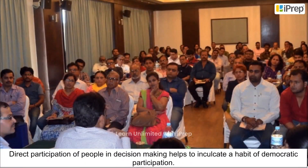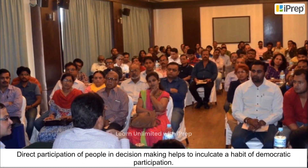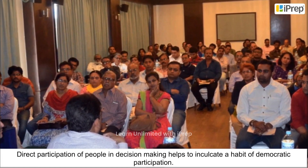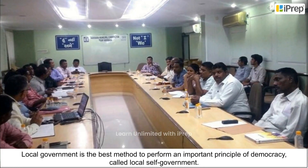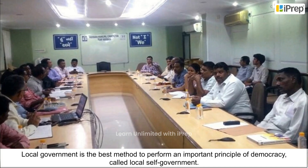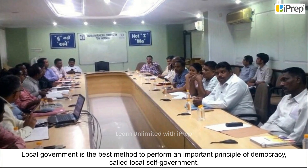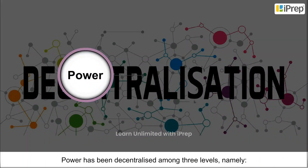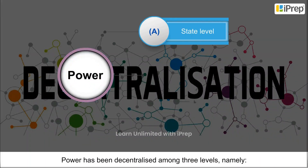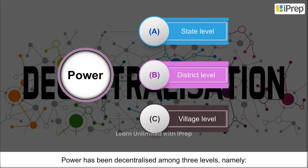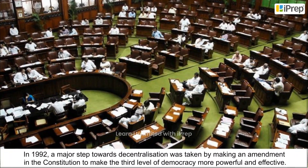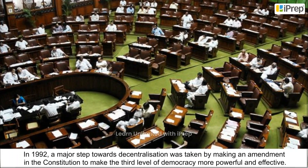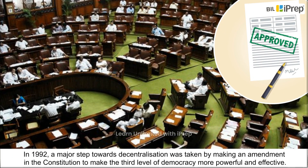Direct participation of people in decision-making helps to inculcate a habit of democratic participation. Local government is the best method to perform an important principle of democracy called local self-government. Power has been decentralized among three levels: state level, district level, and village level.